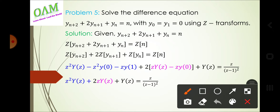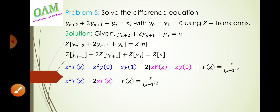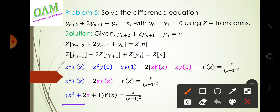We apply the initial conditions y(0) = y(1) = 0. Substituting these values, the initial condition terms vanish, and we get Y(Z) equal to Z divided by (Z−1)².